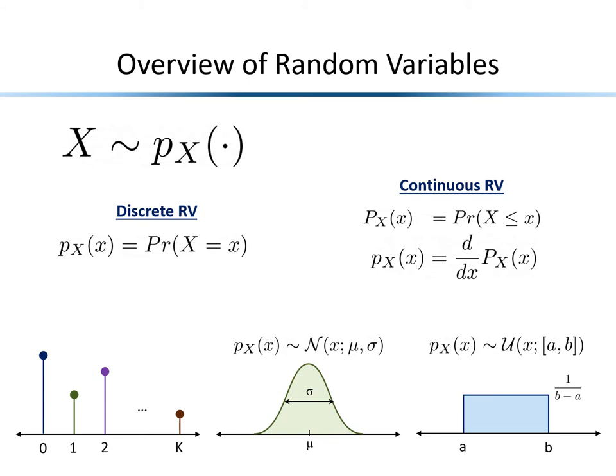Another distribution is the uniform distribution, where we can only observe the random variable within a finite interval, but within that interval the variable can be continuous with infinite precision. The salient parameters are just the starting and stopping point of that interval, and all points in between are assumed equally likely to be observed.